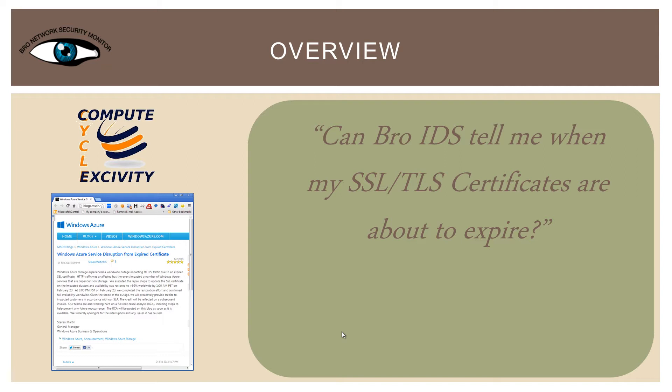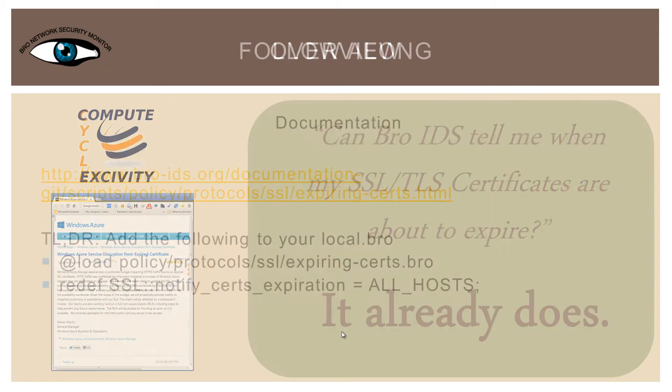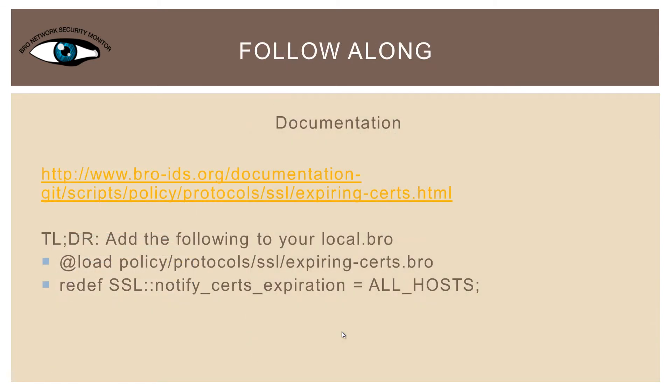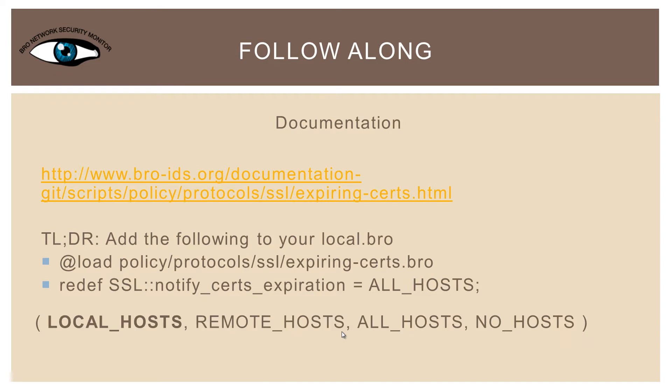We'll revisit the why in a few minutes, but the short answer is: it already does. The TL;DR is simply this — add the following two lines to the end of your local.bro file: load the expiring-cert.bro script, then specify which hosts you would like checked, where all_hosts is one of the following: the default of localhost only, remotehost only, allhosts, or nohosts.